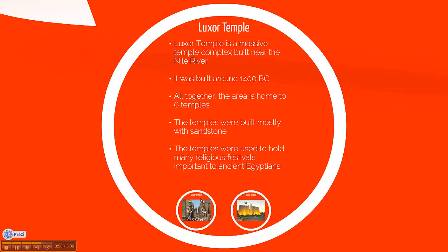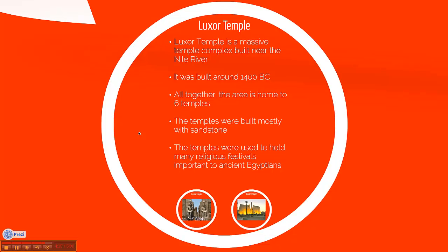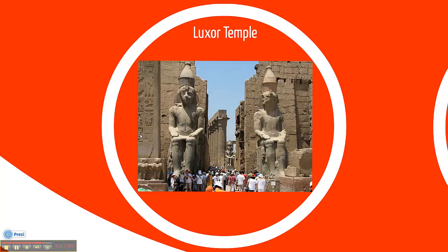The Luxor Temple. Luxor Temple is a massive temple complex built near the Nile River. It was built around 1400 BC. Altogether, the area is home to six temples. The temples were built mostly with sandstone and were used to hold many religious festivals and important events for ancient Egyptians. Here are some pictures of Luxor Temple.